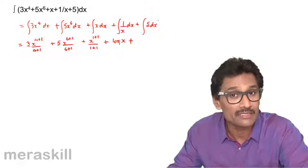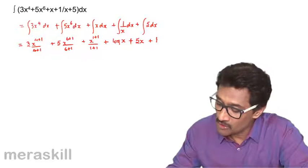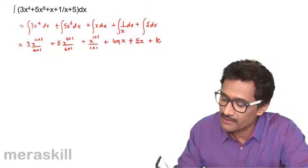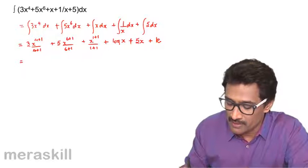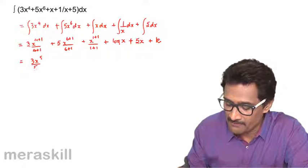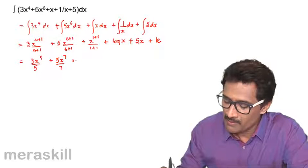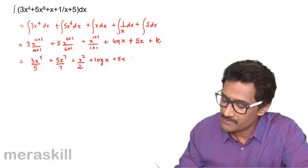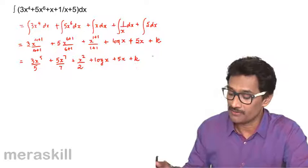The constant k is the sum of all the individual constants k1, k2, k3, k4, k5 combined together. So the final answer is 3x raised to 5 by 5, plus 5x raised to 7 upon 7, plus x squared upon 2, plus log x, plus 5x, plus constant k. We write a single common constant as mentioned in the previous example.